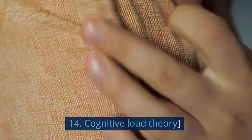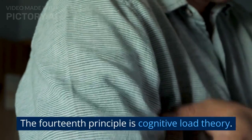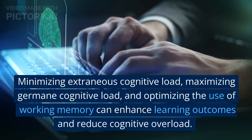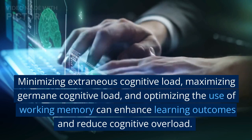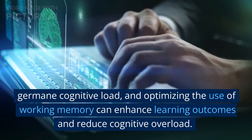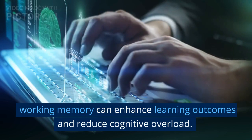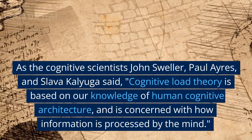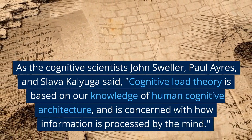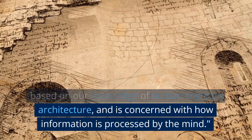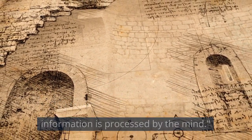14. Cognitive Load Theory. The fourteenth principle is cognitive load theory. Minimizing extraneous cognitive load, maximizing germane cognitive load, and optimizing the use of working memory can enhance learning outcomes and reduce cognitive overload. As the cognitive scientists John Sweller, Paul Ayres, and Slava Kalyuga said, cognitive load theory is based on our knowledge of human cognitive architecture, and is concerned with how information is processed by the mind.